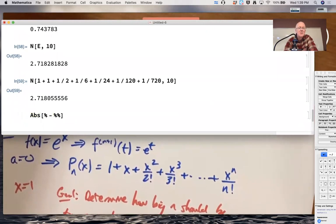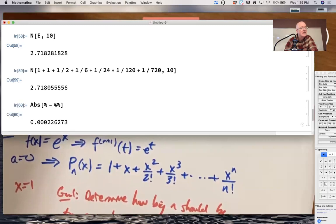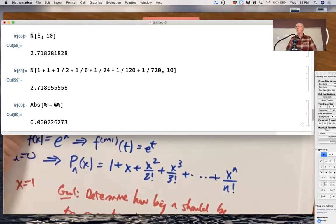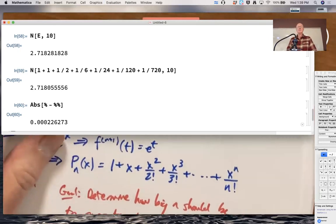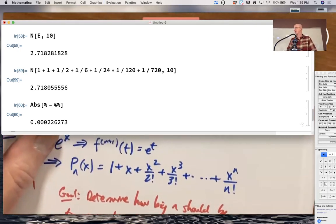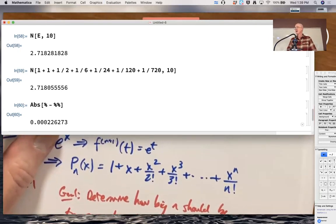What's the absolute value of the difference of those two outputs? Percent sign refers to the preceding output. 2% sign is referred to two preceding outputs. This should be less than 0.001. Yep, by about a factor of 5. Could you get away with n equals 5? Maybe, but n equals 6 or greater works for sure. All right, have a good day.